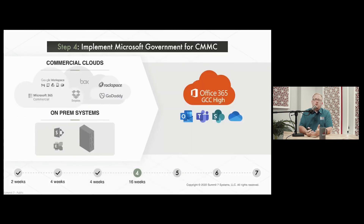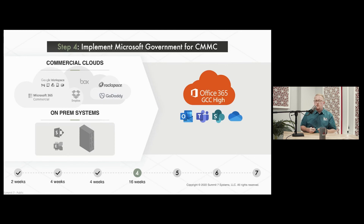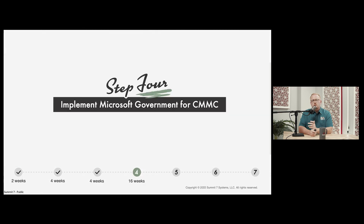After implementation, we migrate. This means migrating from existing collaboration services like Office 365 Commercial, Gmail, GoDaddy, or Rackspace, or migrating existing virtual infrastructure into the cloud. An on-prem server gets moved into Azure; an on-prem Exchange server gets its mail migrated to GCC High — right in the compliance boundary for CMMC Level 2 and DFARS 7012.